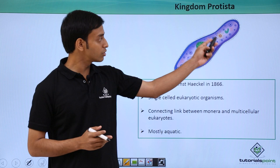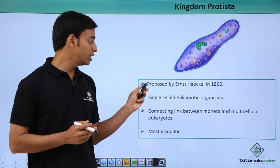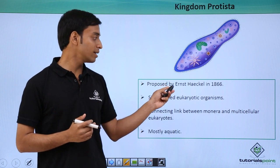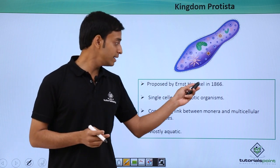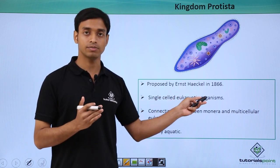This is a typical structure or one of the examples of Protista. This kingdom was proposed by Ernst Haeckel in the year 1866. These are single-celled eukaryotic organisms.